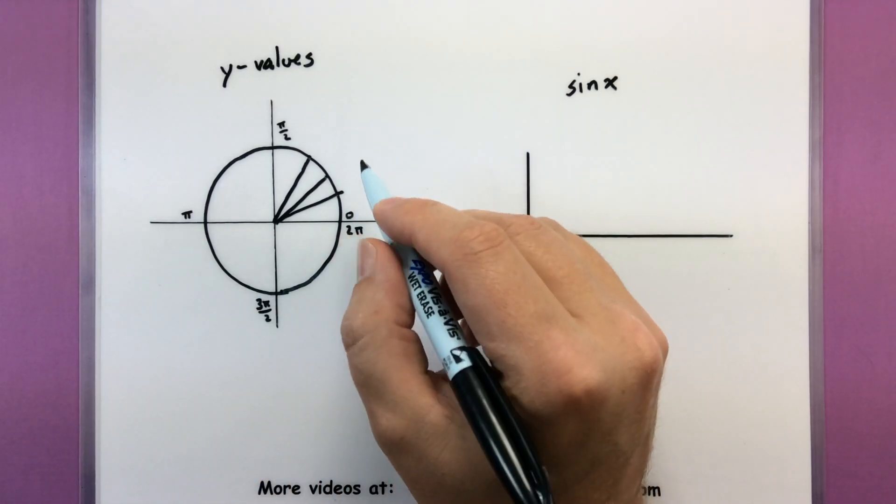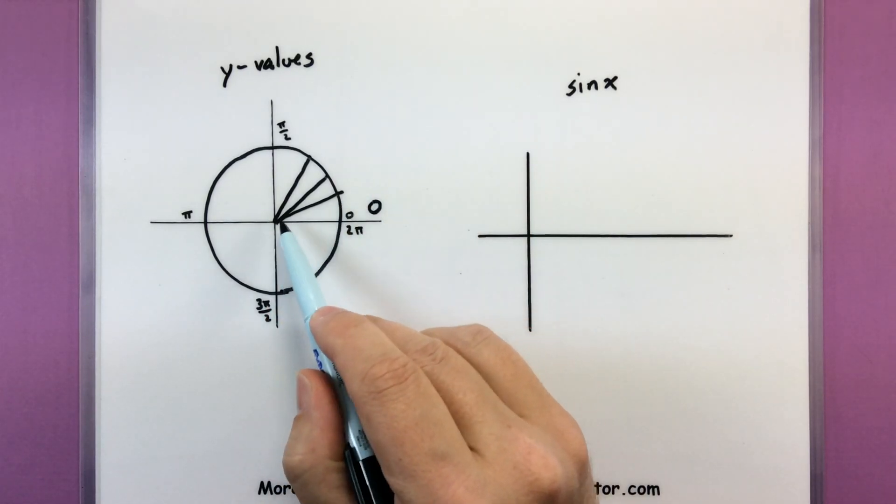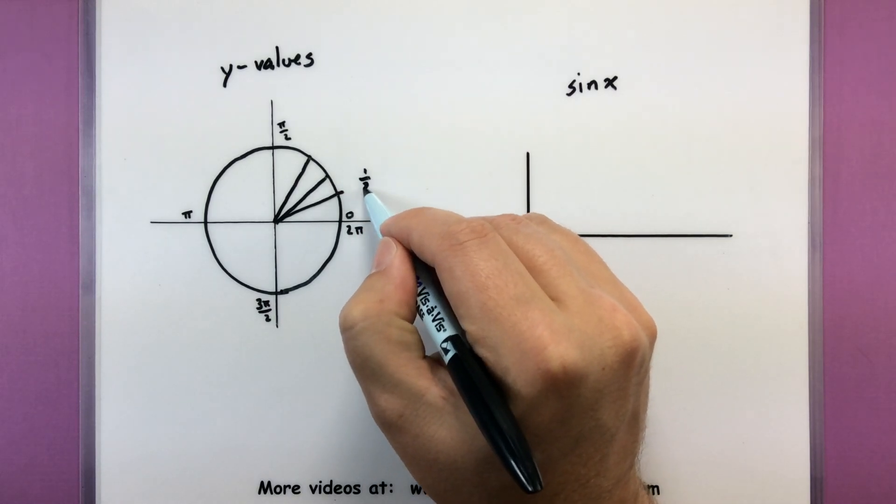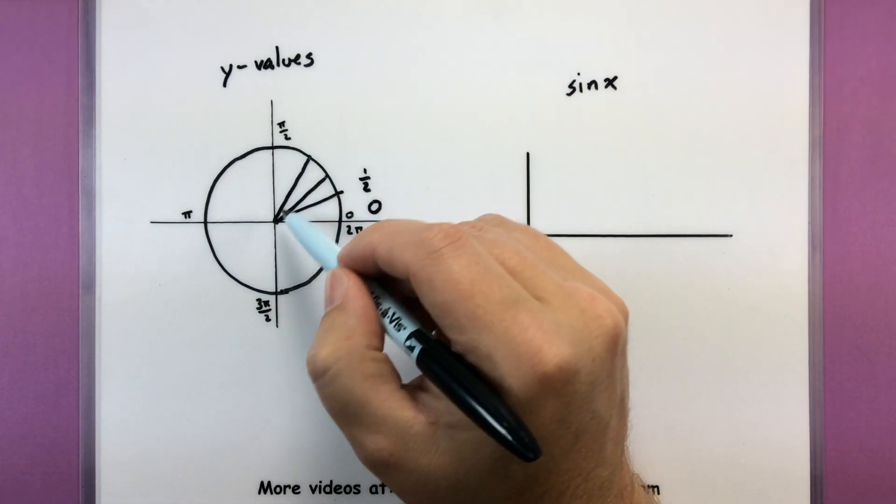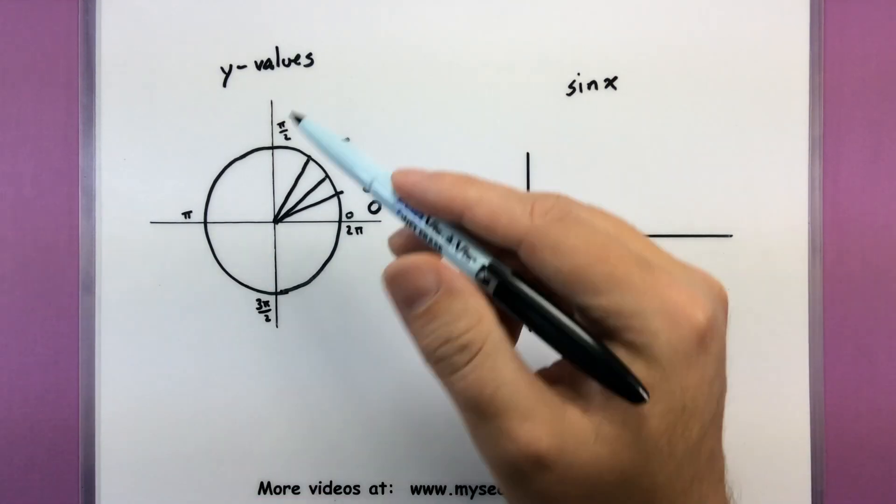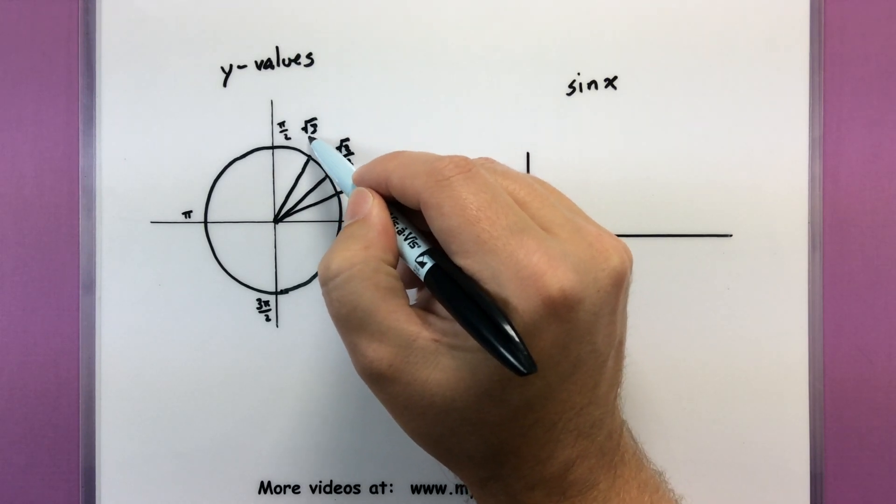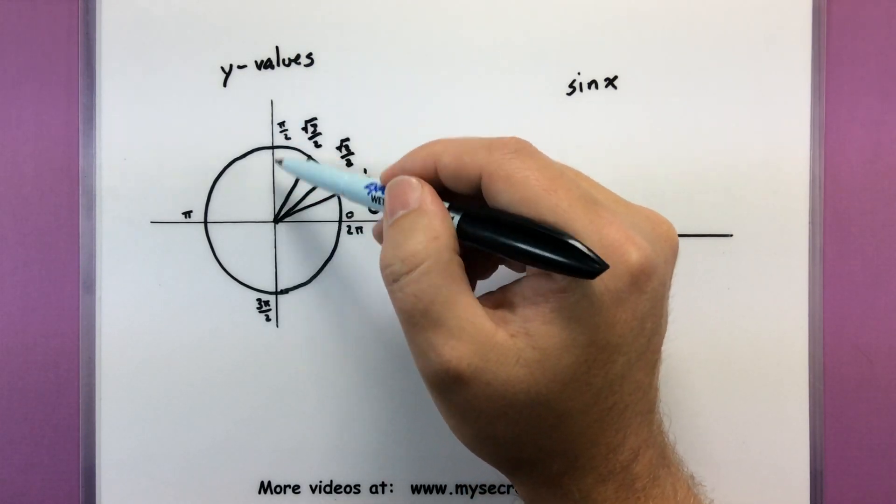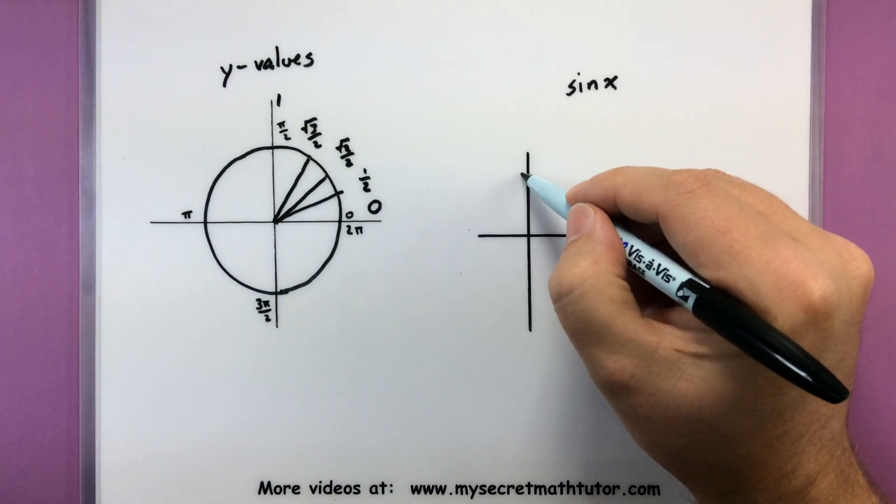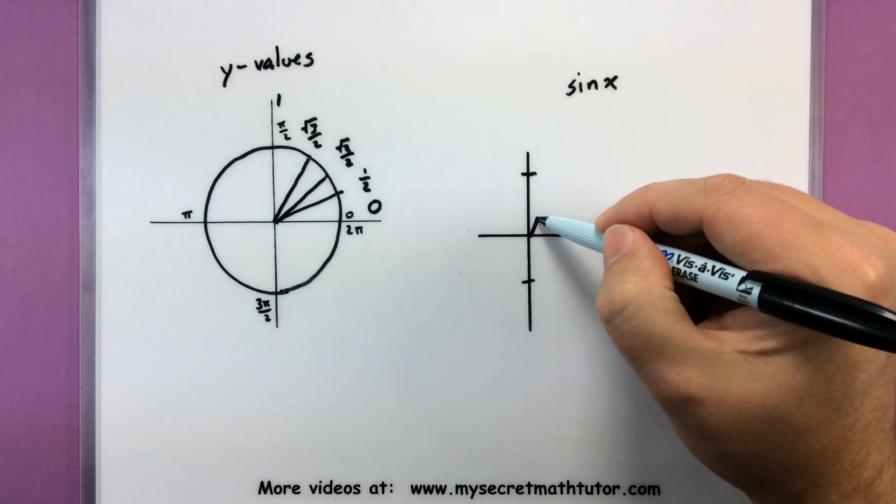When we're at an angle of 0, the y value would simply be 0. When we're at pi over 6, that's our first major angle there, we'd be at 1 half for our y value. For pi over 4, I have square root of 2 over 2. And for pi over 3, it looks like we're at square root of 3 over 2. And finally, straight up and down at pi over 2, we have a value of 1.